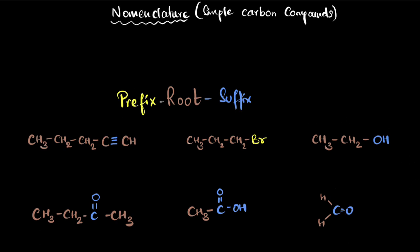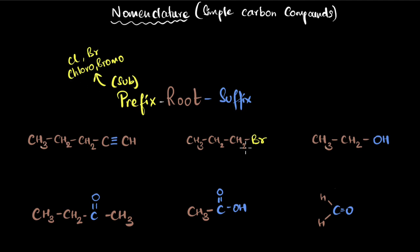The prefix is usually a substituent group. If you have chlorine as a substituent group attached, you will start with 'chloro.' If you have bromine, you use 'bromo.' Similarly, you might have 'iodo' or 'fluoro,' but chlorine and bromine are the most common ones.